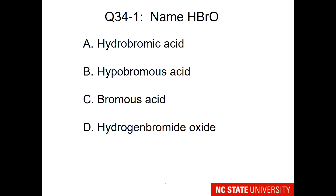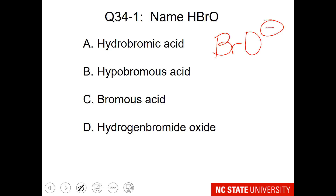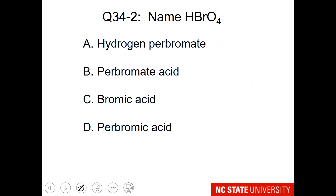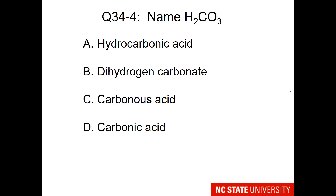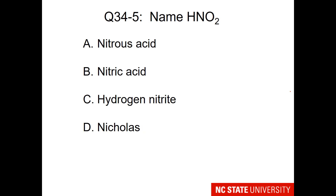Here are your student questions. Name HBrO. I recommend you take away the hydrogens first to identify the ion, then decide on the acid's name. This is the hypobromite ion, so you just need to change the '-ite' to the proper acid ending. How about HBrO4? And continuing with the bromine theme, how about HBr? How about H2CO3? And HNO2.